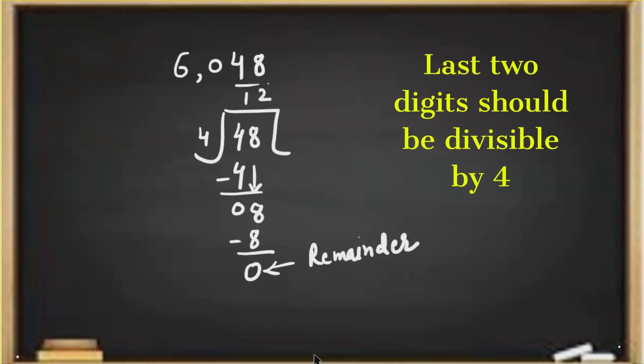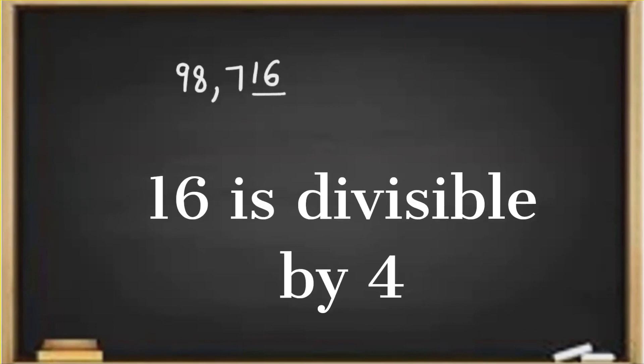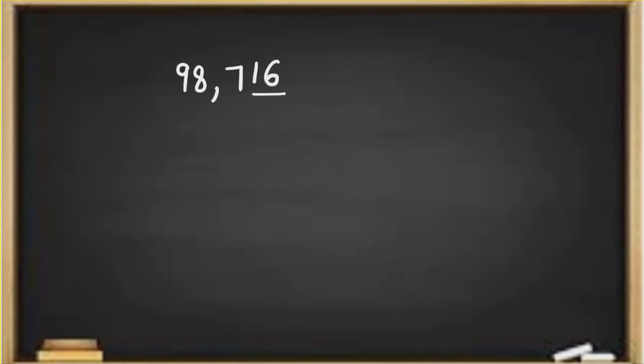Similarly, if I will take another example, that is 98,716. The last two digits, that is 16, is divisible by 4. That means 98,716 is divisible by 4.